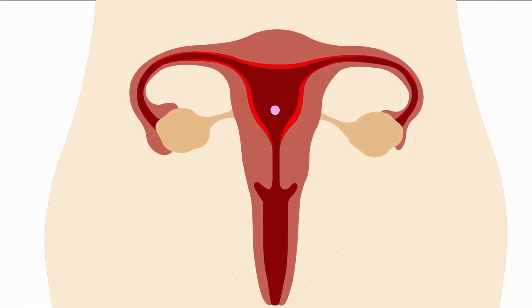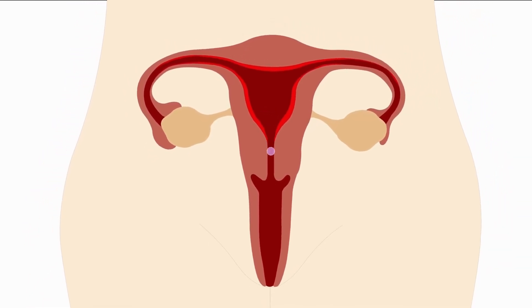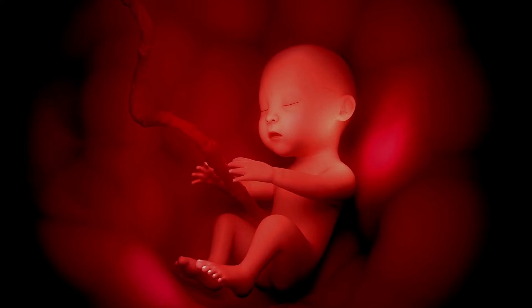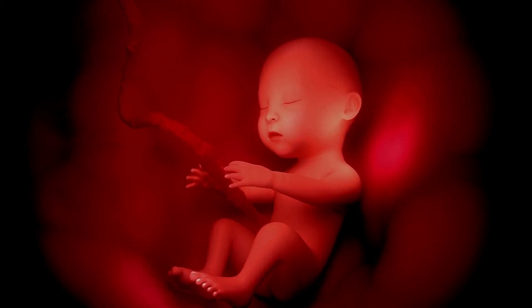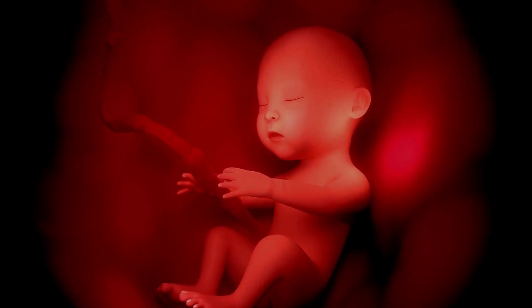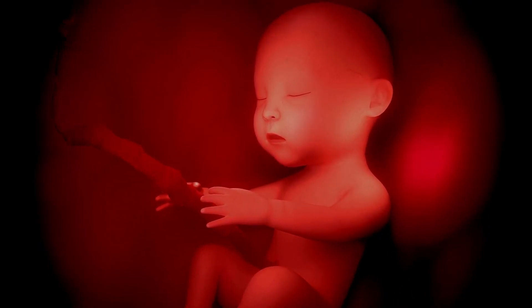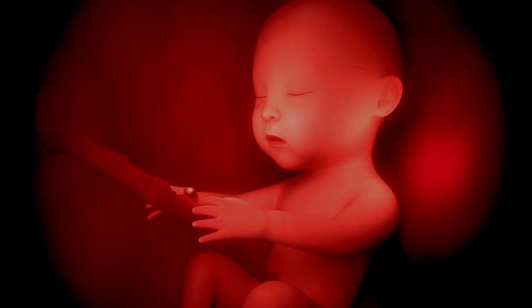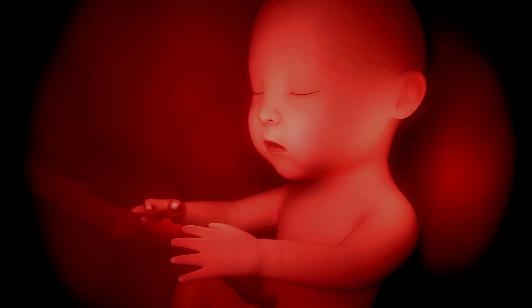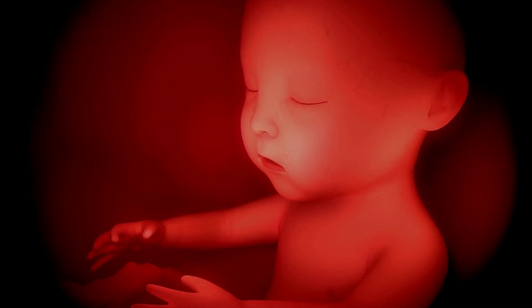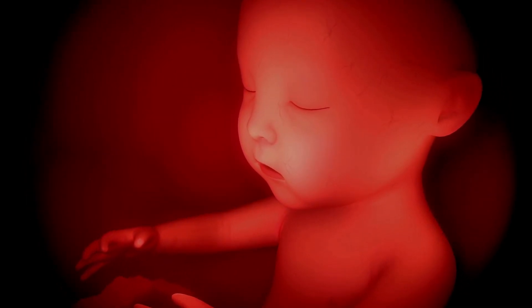If implantation happens, the cells continue to divide — some cells develop into your baby, and others form the placenta. You begin to release hormones that tell your body a baby is growing inside your uterus. These hormones also signal the uterus to maintain its lining rather than shed it, which means you won't get your menstrual period — which may be the first way you know you're pregnant.